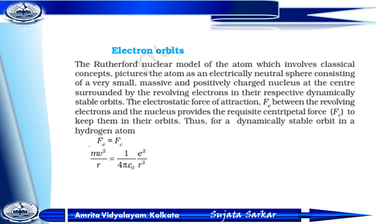In Rutherford's nuclear model of an atom, which involves the classical concept and picture of an atom: the atom is an electrically neutral sphere consisting of a very small, massive, positive-charge nucleus at the center, which is surrounded by revolving electrons in their respective dynamically stable orbits. There is a force of attraction Fe between the revolving electron and the nucleus, which provides the requisite centripetal force to keep them in their orbit.